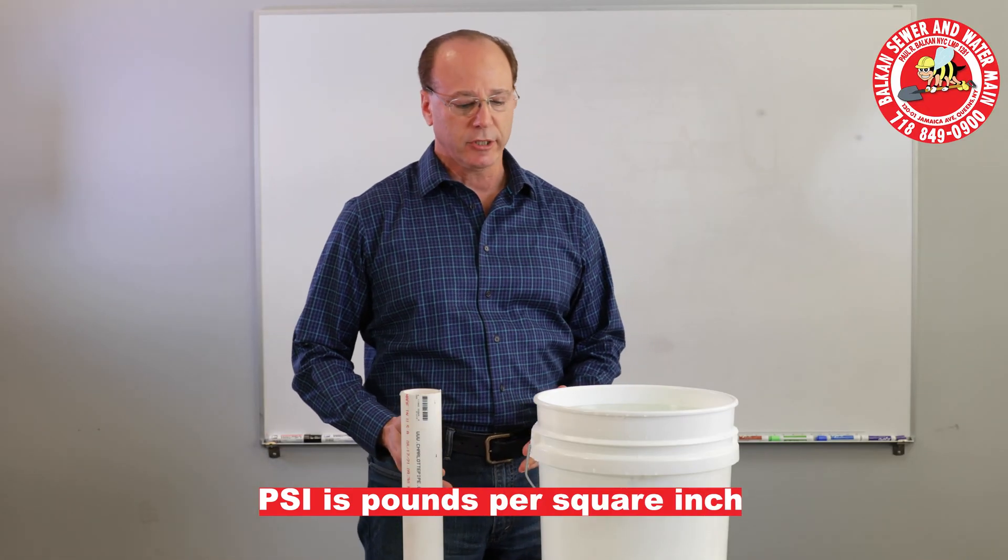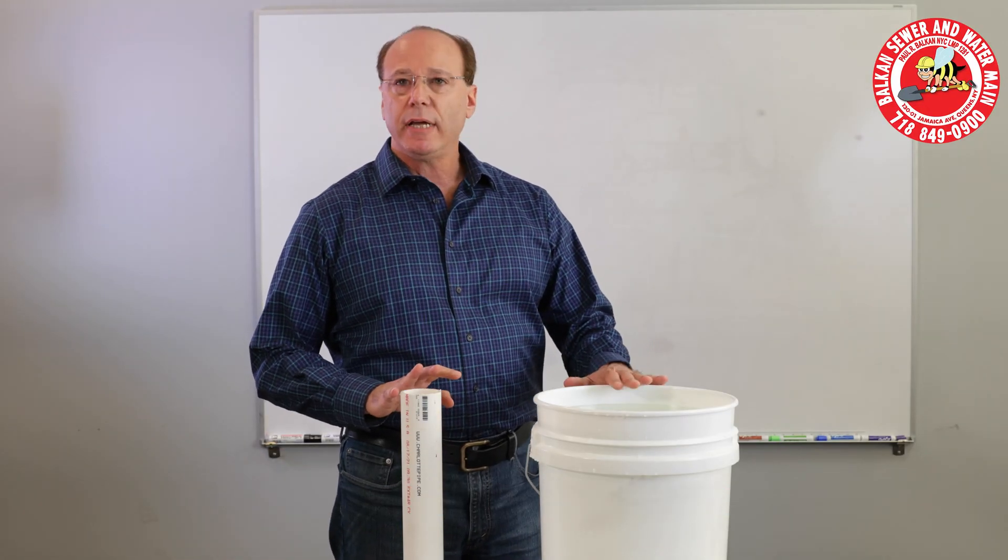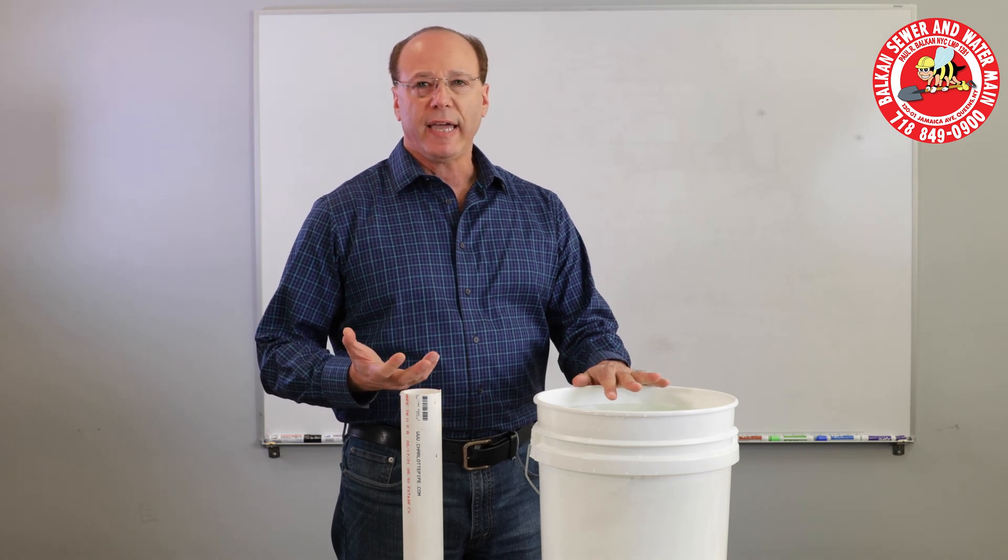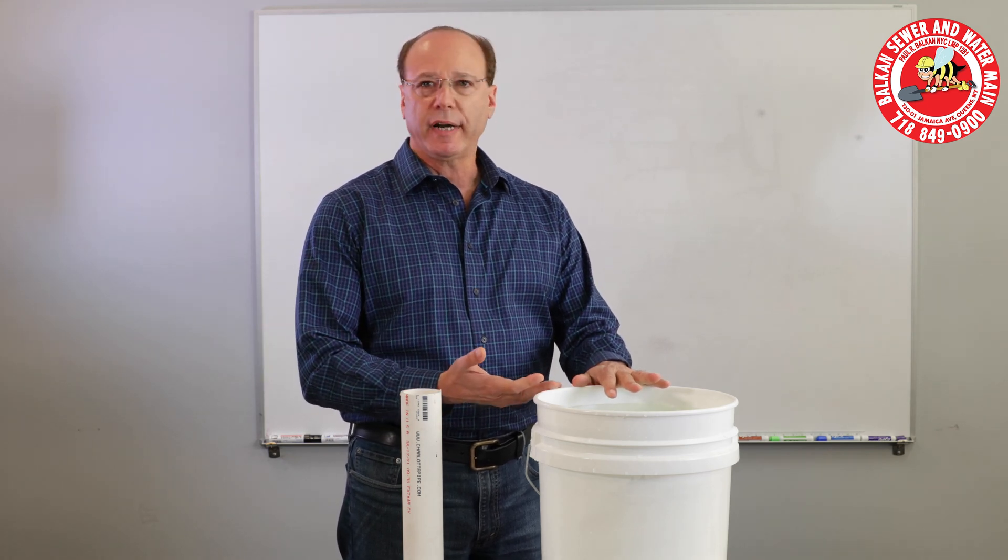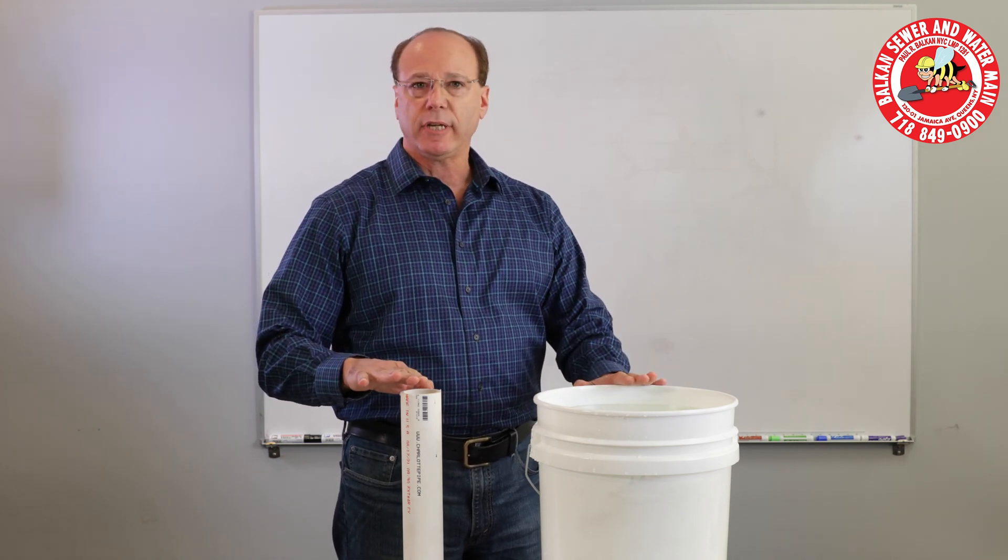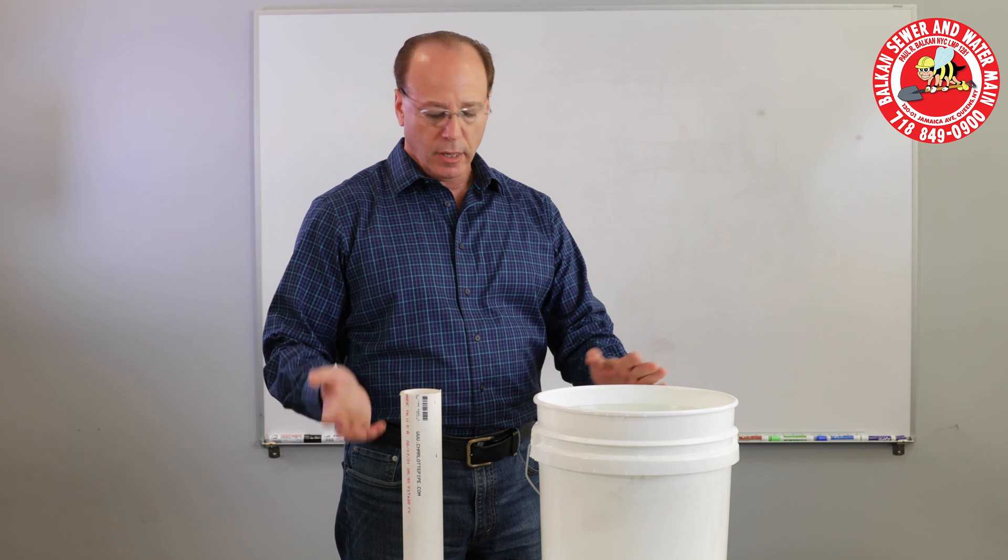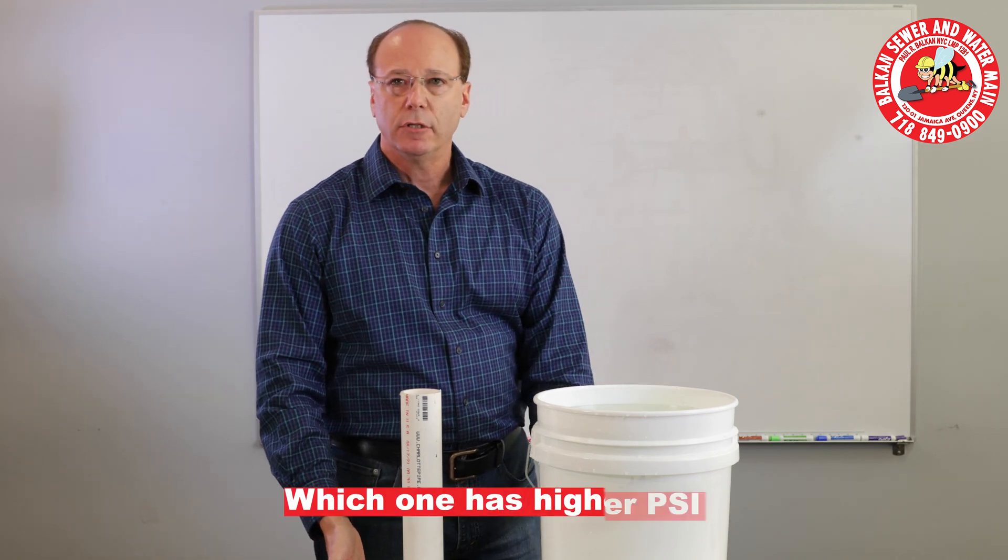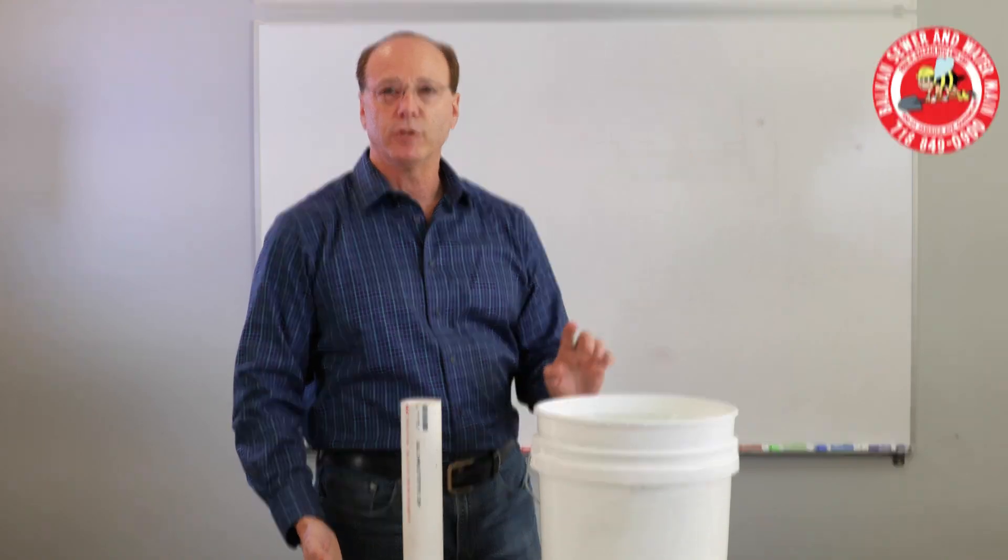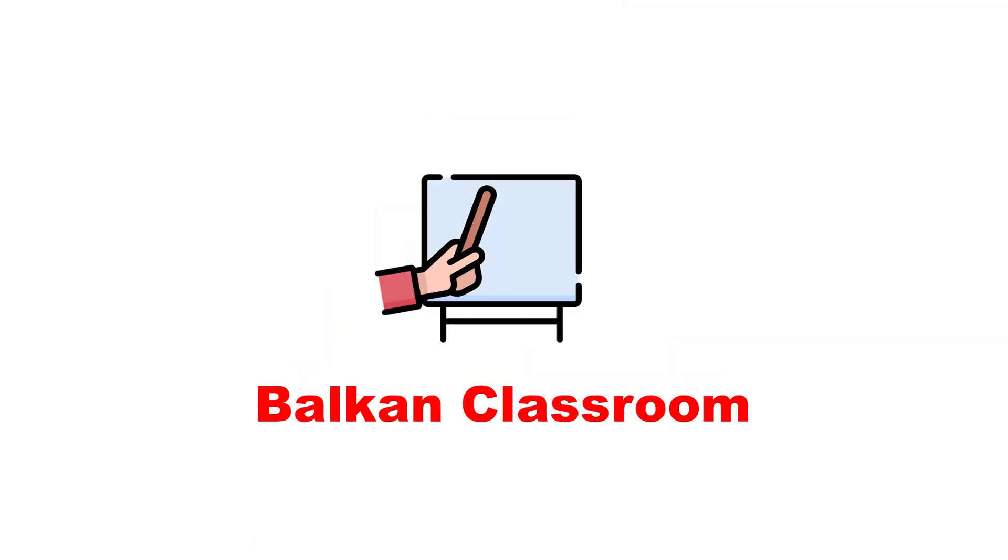PSI is pounds per square inch. So in front of me I have a five gallon pail of water which water weighs a little over eight pounds a gallon. It's about 41 and a half pounds of water and I have a two inch pipe. They're both filled up to the same level. So the question would be at the base of the two of these which one has the higher PSI and I'm going to move over to my whiteboard and explain that for you.